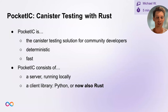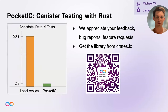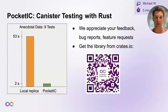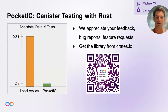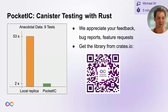I just want to show you his speed gains. Using the local replica with DFX, his nine tests took approximately 53 seconds. When he switched to Pocket IC, that was just under two seconds. Of course, it's just one anecdote, one developer, but I do hope these numbers motivate you to have a look into testing with Pocket IC.